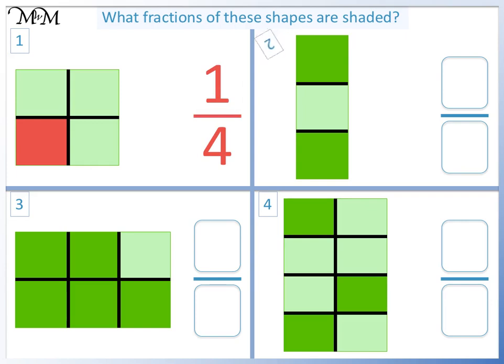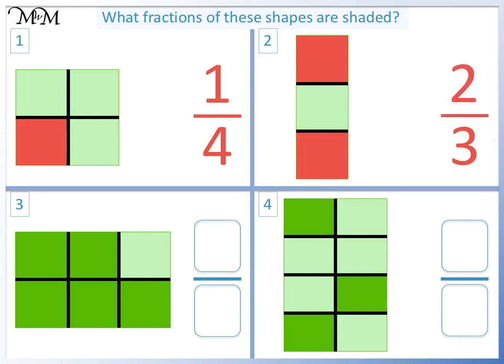Question two. There are three parts in total, so the denominator is three. Two parts are shaded, so the numerator is two. The fraction is two thirds.